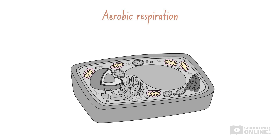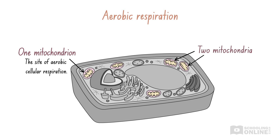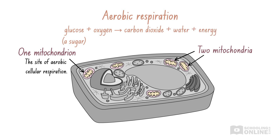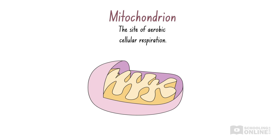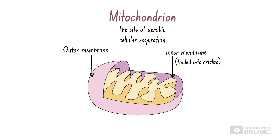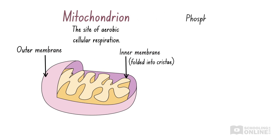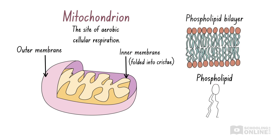Now let's look at organelles involved in producing energy and food for plant cells. The mitochondrion is an organelle that is the site of aerobic cellular respiration. Aerobic cellular respiration involves the conversion of glucose and oxygen to carbon dioxide and water, releasing energy which can be used by the cell. This process is called aerobic cellular respiration because oxygen is needed for the reaction to occur. Each mitochondrion is surrounded by two membranes — an outer and an inner membrane. The inner membrane is folded into cristae, which are small ridges. Both membranes are composed of a phospholipid bilayer.